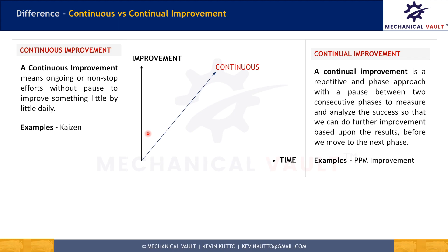The second term is continual improvement. A continual improvement is a repetitive and phased approach with a pause in between two consecutive phases to measure and analyze the success, so that we can do further improvements based upon our learnings before we move to the next phase. Like our product development cycle is divided into many phases and we have reviews after every phase to analyze the success of the current phase. We intend to learn from the current phase and do better in the next one, so there is a pause between two phases of product development.